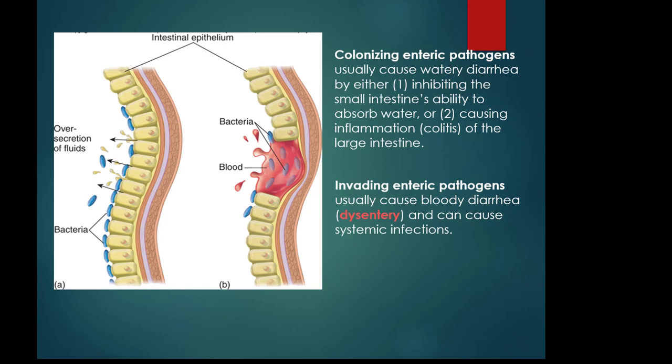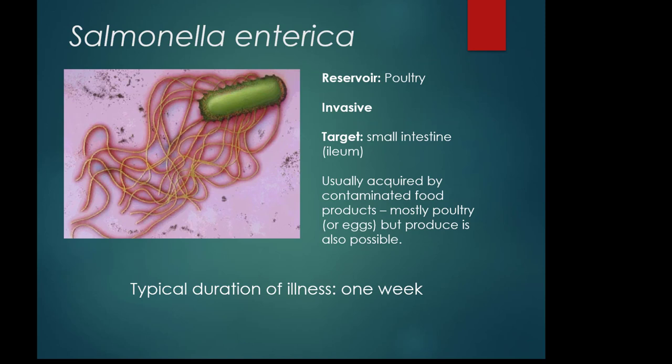Most people have heard of Salmonella poisoning. The reservoir for many Salmonella species is poultry — chickens — so there is a strong correlation with chicken meat and eggs. Because farms are sometimes mixed, Salmonella can spread to leafy greens and contaminate produce as well. Salmonella is an invasive species targeting the small intestine, specifically the ileum. People can die of Salmonella poisoning, though most don't. The illness typically resolves within about a week.